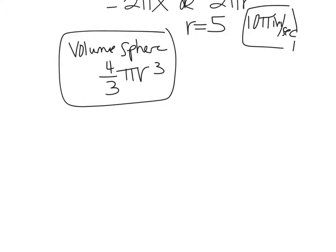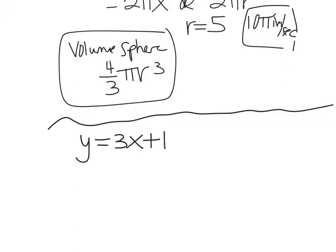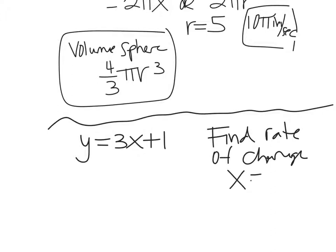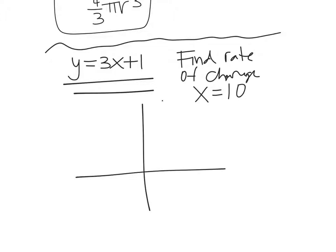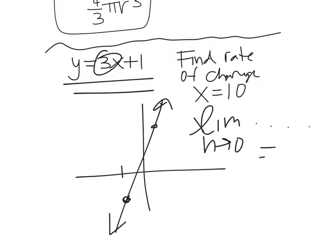Let's talk quickly about lines. If you have something like y equals 3x plus 1 and want the instantaneous rate of change at x equals 10, you don't have to go through the whole process. This is linear, and linear functions have a constant slope. No matter what x you pick, if you do the limit as h goes to 0 and work it all out, you'll get 3. If it's a line, the slope is constant.